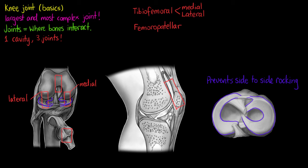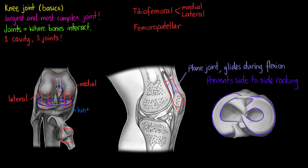Moving on to how we classify these joints: our femoropatellar joint is classified as a plane joint and mainly allows the patella to glide across the surface of the femur during knee flexion. The tibiofemoral joint acts mainly as a hinge, but it's hard to classify due to the complex nature of the knee, as the femur has a medial and lateral condyle that interacts with the surface of the tibia — meaning the joint is known as bicondylar. Small amounts of side-to-side rotation are allowed when the knee is bent, but upon full extension this is largely hindered by the meniscus.